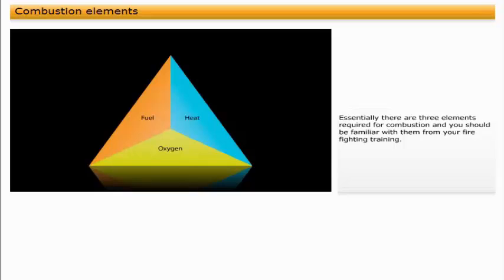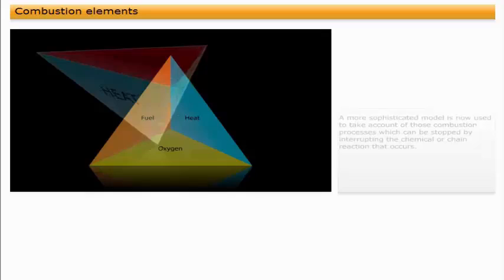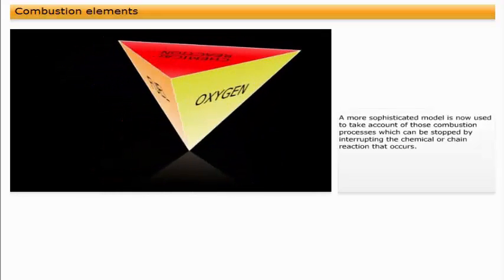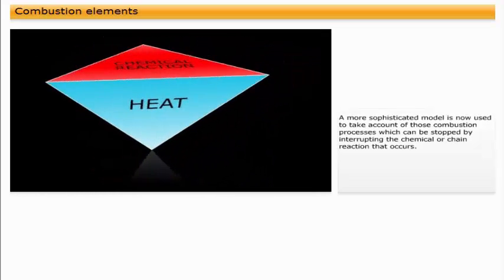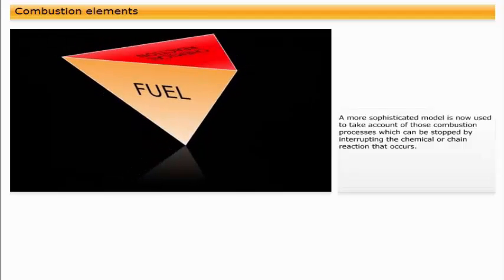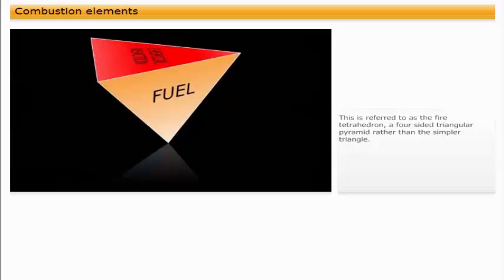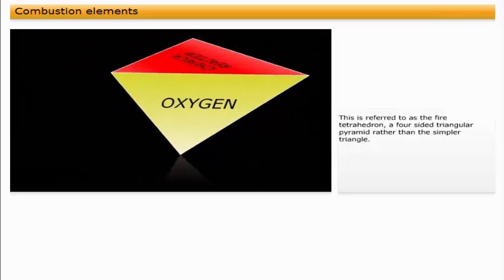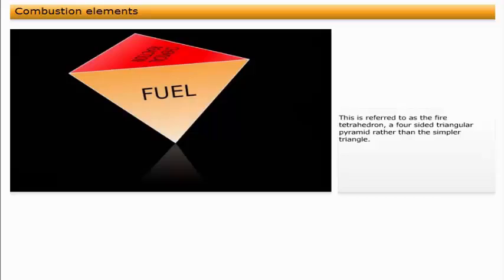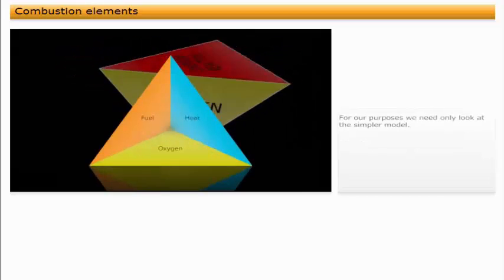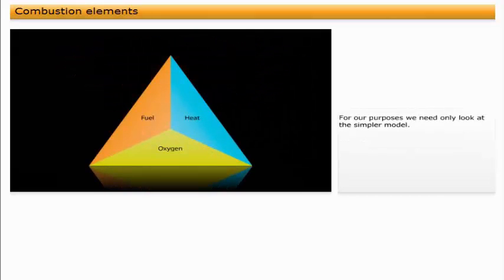Essentially, there are three elements required for combustion, and you should be familiar with them from your firefighting training. These form the fire triangle, showing the relationship between fuel, oxygen, and heat. A more sophisticated model is now used to take account of those combustion processes which can be stopped by interrupting the chemical or chain reaction that occurs. This is referred to as the fire tetrahedron, a four-sided triangular pyramid rather than the simpler triangle. For our purposes, we need only look at the simpler model.